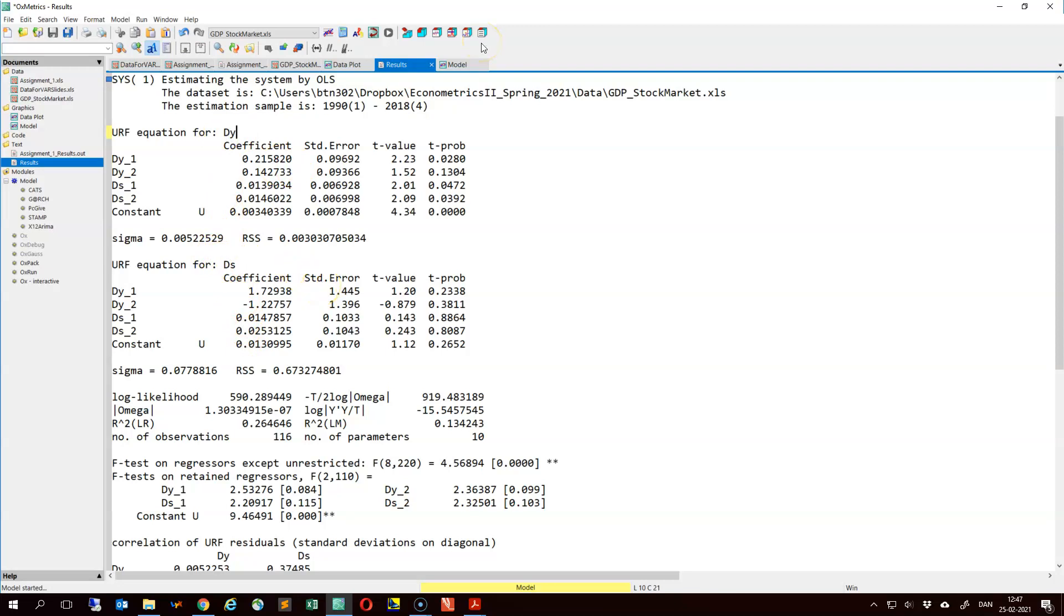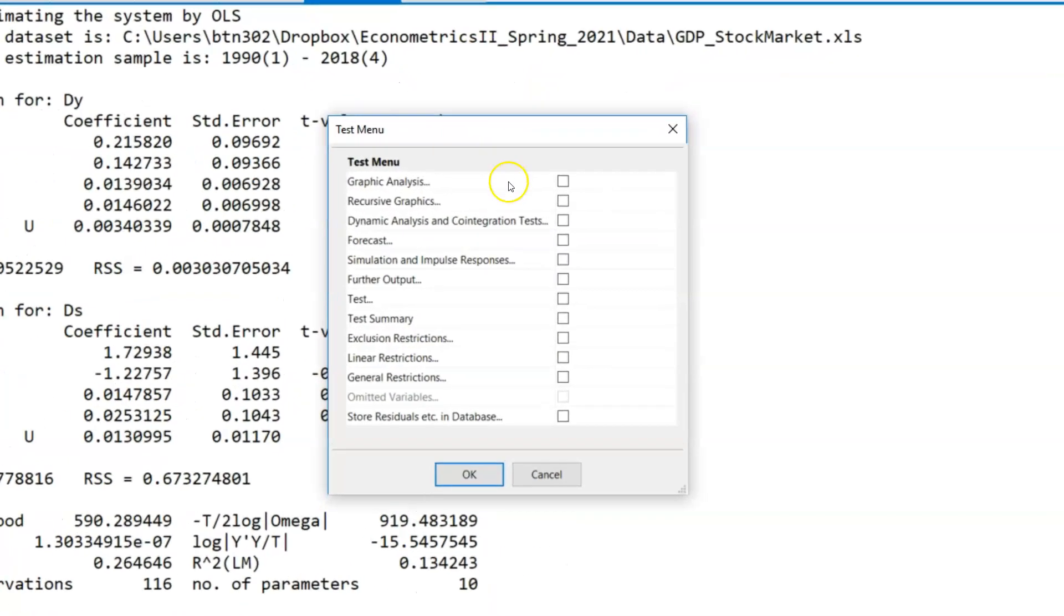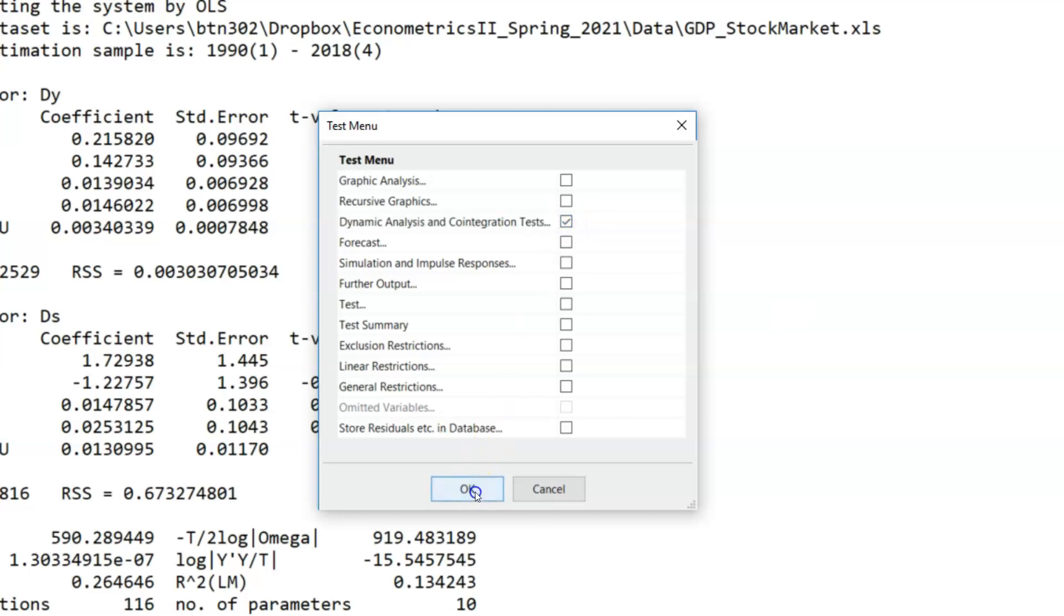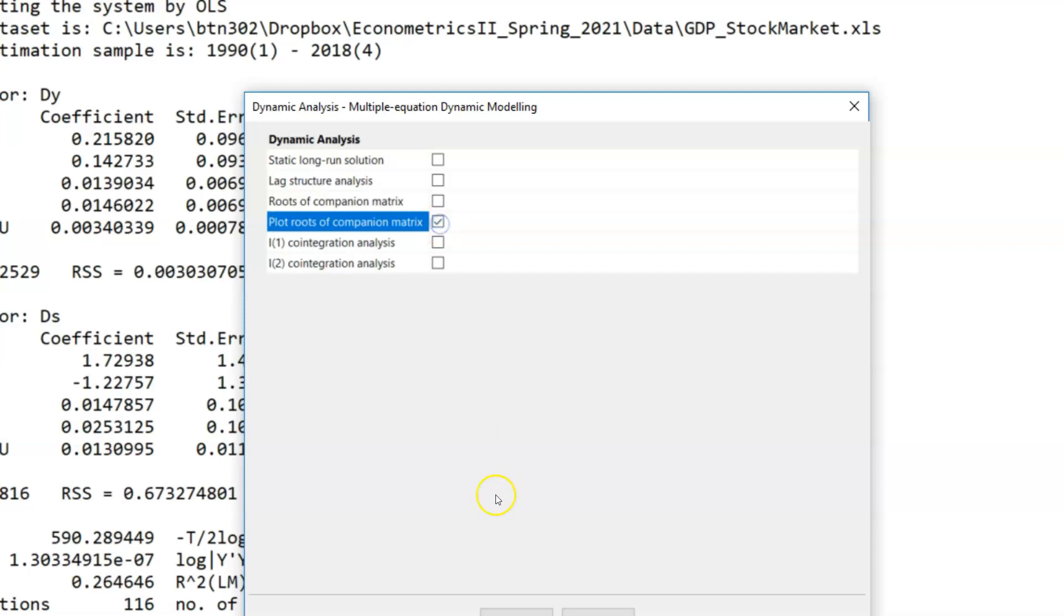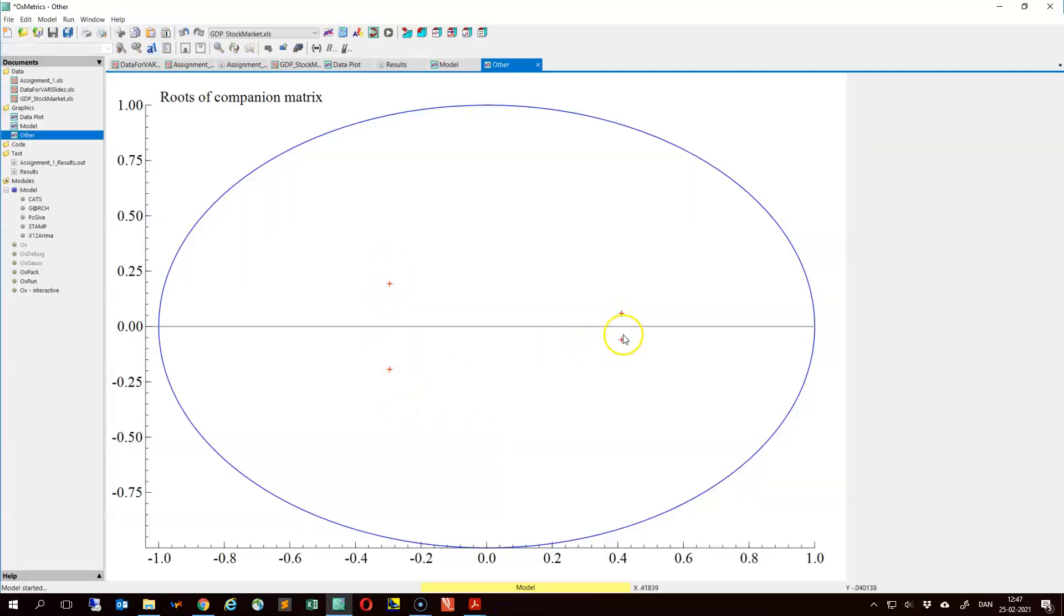We may inspect the eigenvalues of the companion matrix. We can do that by choosing dynamic analysis. These are the four eigenvalues of the companion matrix. Note that it's a bivariate VAR(2) model. So the companion matrix is 4 by 4. Recall here that the stationarity condition for the VAR models is that the eigenvalues of the companion matrix should be inside of the unit circle. Here we have some point estimates of the eigenvalues and these indeed lie within the unit circle. So the point estimates at least suggest that we have stationarity. Of course, this is not a formal test, but a fine indication of stationarity.